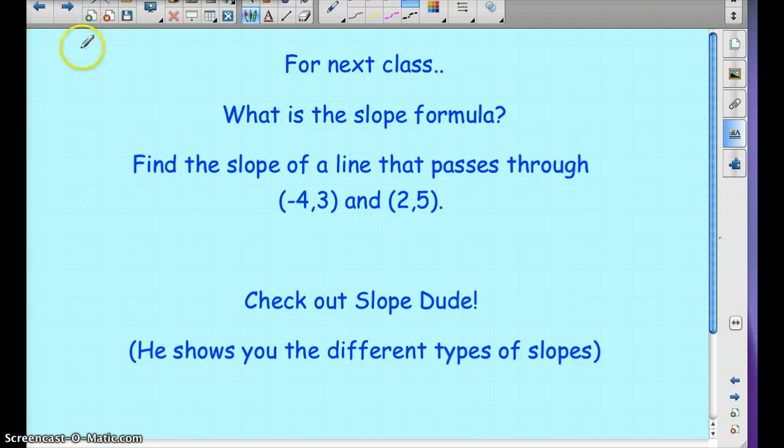All right. So now what you're going to do is I want you to find the slope formula. What is it? Maybe you remember what it is. Maybe you don't. Maybe you need to find it. And then I want you to use that to find the slope that passes through negative 4 comma 3 and 2 comma 5. So this is a visual representation of the rate of change with a linear, or with a line or linear equation.